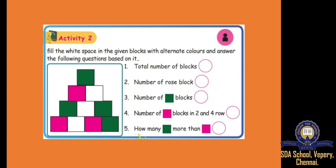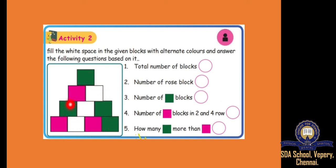See the next one — they have given these blocks. Different colors — pink, white, green. Seeing this block we have to answer these questions. Total number of blocks: 1, 2, 3, 4, 5, 6, 7, 8, 9, 10 — so 10 blocks are there. Number of pink rows: 1, 2, 3 — 3 are there. Number of green blocks: 1, 2, 3, 4 — 4 are there. Number of blocks in second and fourth row: second row 1, fourth row 2 — total 3 are there. How many green blocks more than pink? Green are 4, pink are only 3, so 1 is extra.